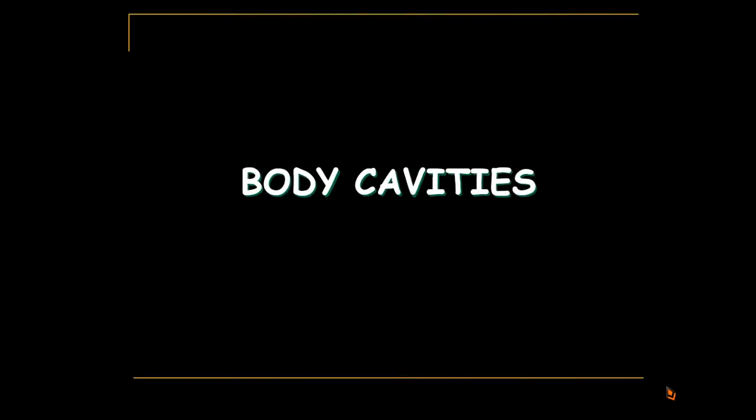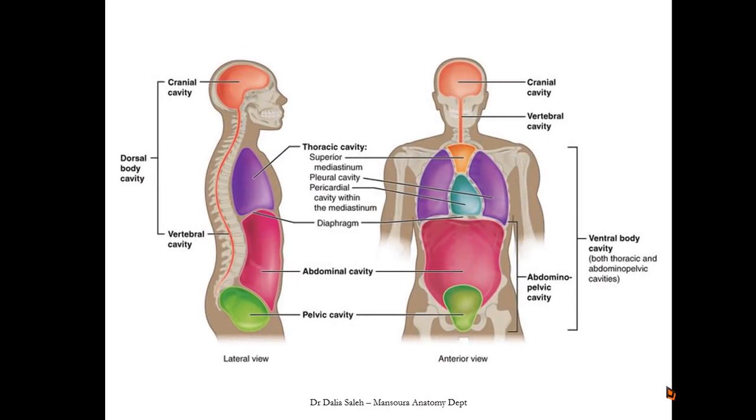Inside our body, there are cavities. As we can see in this diagram, in this side view, we have two main cavities. One near the back, we call it the dorsal body cavity, and one in the front, we call it the ventral body cavity.